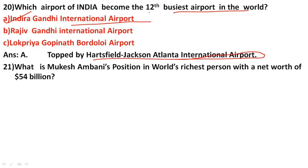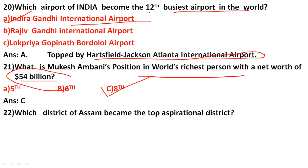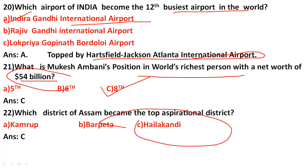Mukesh Ambani's position in the world's richest persons list with a net worth of 54 billion dollars — the correct answer is option C: eighth position. Which district of Assam became the top aspirational district? The answer is Hailakandi district, which recently achieved the top aspirational district position.